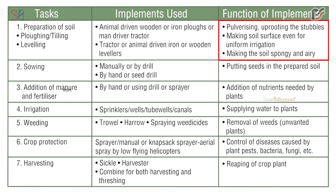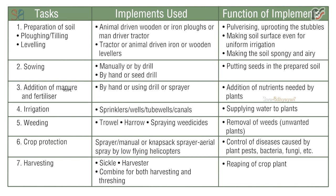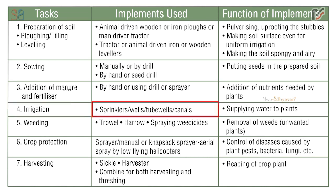Task 2 is sowing — done manually or by drill, using hand or seed drill, for putting seeds in the prepared soil. Task 3 is addition of manure and fertilizer — by hand, drill or sprayer — for addition of nutrients needed by plants. Task 4 is irrigation — using sprinklers, wells, tube wells or canals — for supplying water to plants.